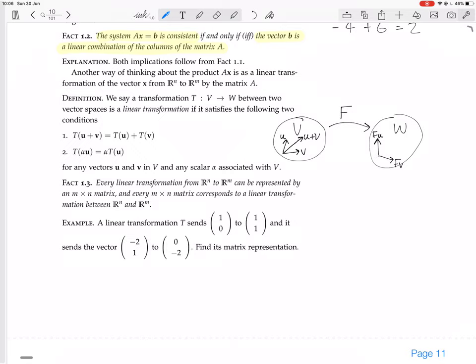And u plus v, in V, that's itself a vector, so F of u plus v is also a vector. But there's no particular reason why adding Fu to Fv should give you F of u plus v.